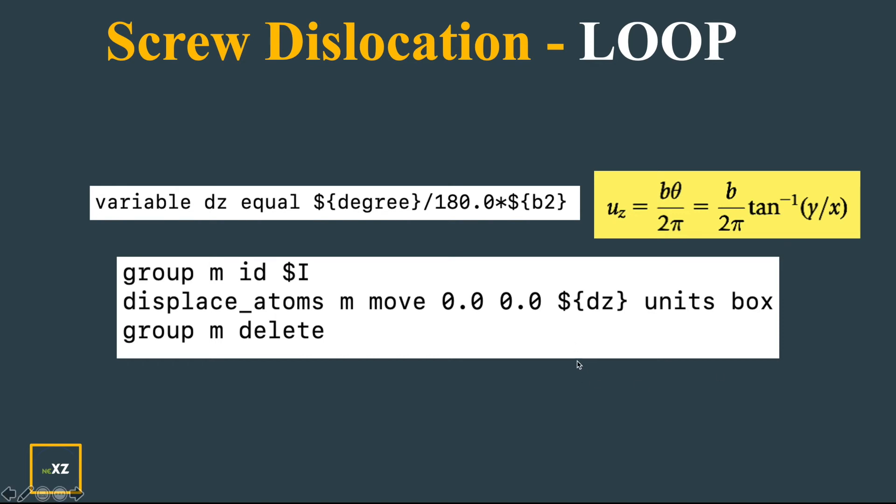Now I group each atom. If I give group m id and this one, it means it groups all the atoms into some m name and it displaces the group of one atom - the group which has only one atom - and it displaces based on this formula in the z direction.